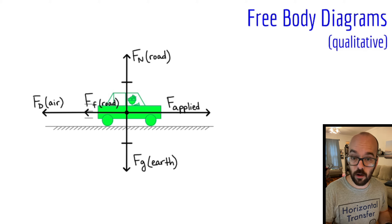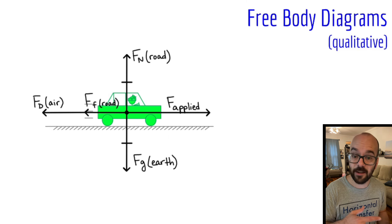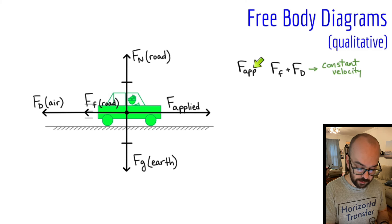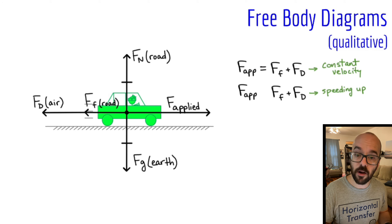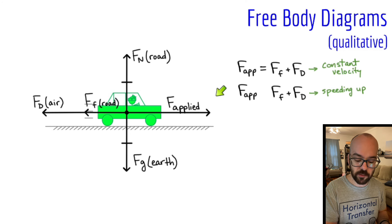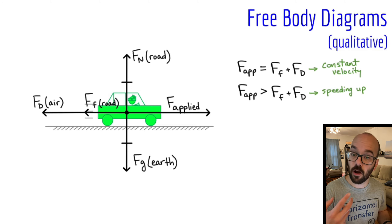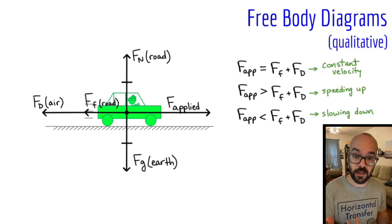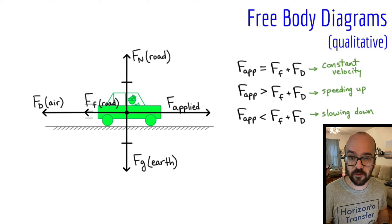So those are the forces acting on the car. Again, like the box example, we could say something about whether the applied force is greater than, equal to, or less than the resistive forces. If the car is moving at constant velocity, the applied force to the right equals the sum of the two leftward forces. If the car is speeding up, the rightward applied force must be greater than the sum of friction and drag. And if the car is slowing down, that applied force is less than the resistive forces — it's as if friction and drag are winning, causing the car to slow down.